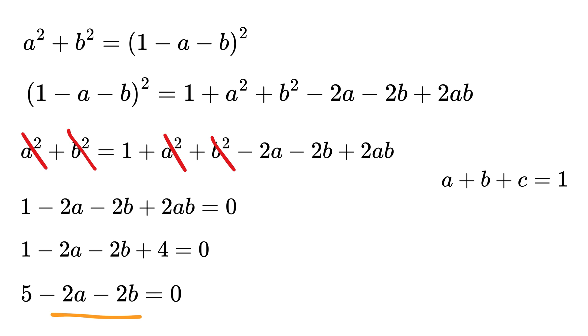Take 2A and 2B to this side to get 2A plus 2B equals 5. And after dividing everything by 2, we get A plus B equals 5 by 2.